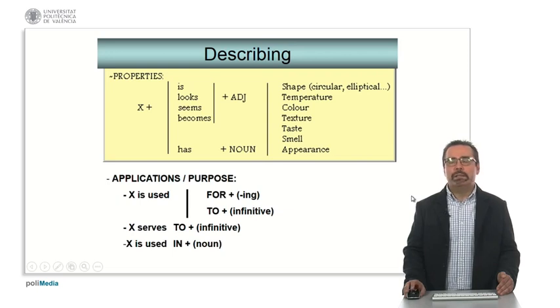Then we can include properties, typically with a verb, general verb, such as is, looks, seems, becomes, has, plus an adjective or a noun. And we can give different properties. To give the applications or the purpose we use, typically the expression is used for plus ing, or to plus infinitive. We can also use the verb serves to, or we can use the expression is used in plus a noun. For example, it is used in mechanical engineering.